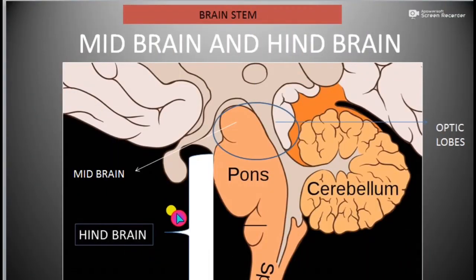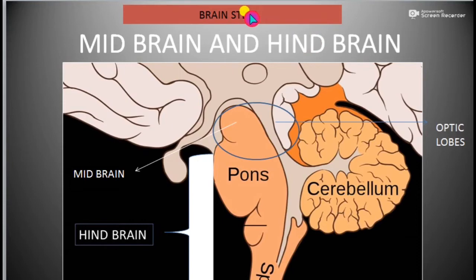Today we are going to learn about the midbrain and the hindbrain. The midbrain and hindbrain together are known as the brainstem. This is the brainstem region — this is the midbrain region and this is the hindbrain.